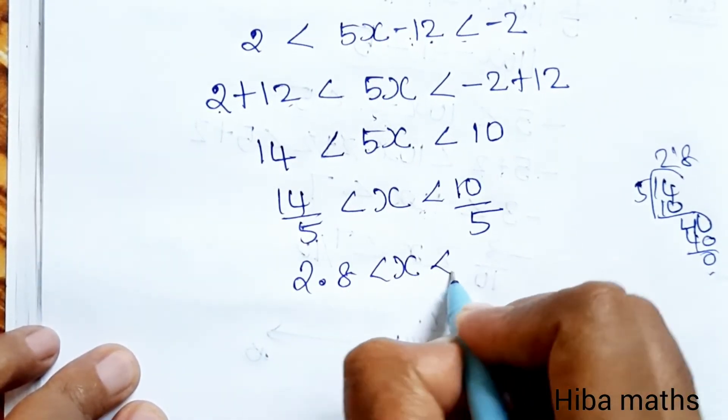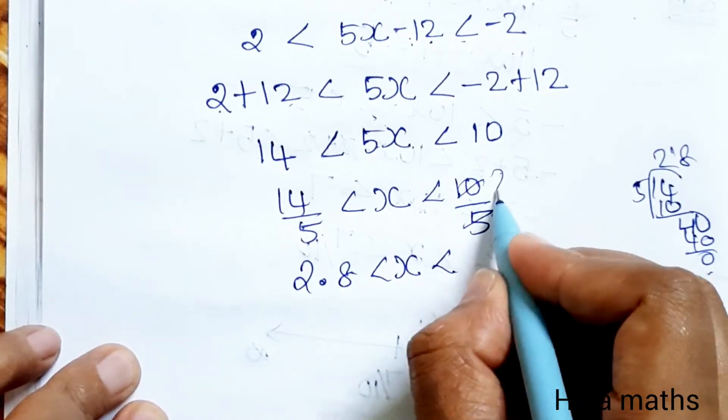2.8 is less than x which is less than 2. 10 by 5 is 2.